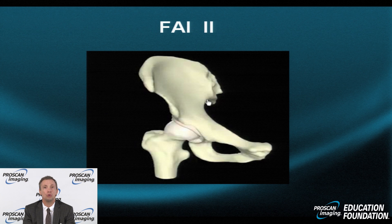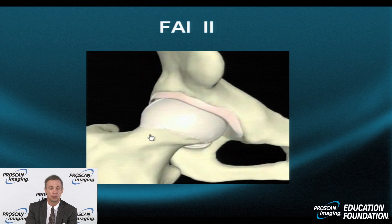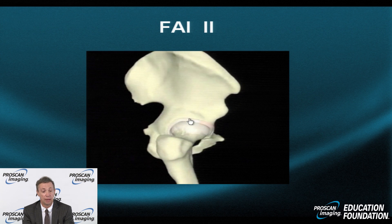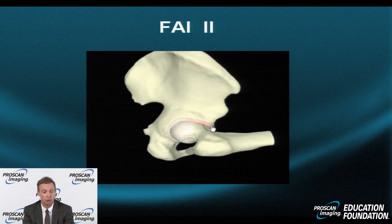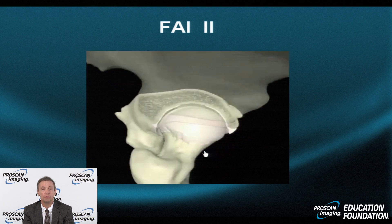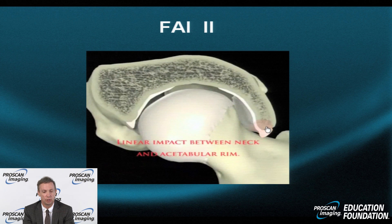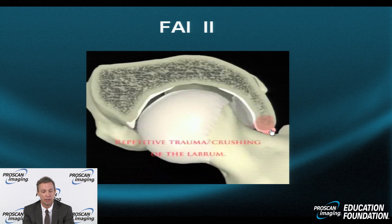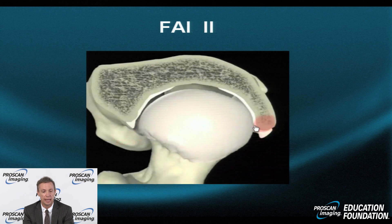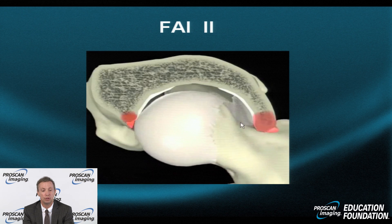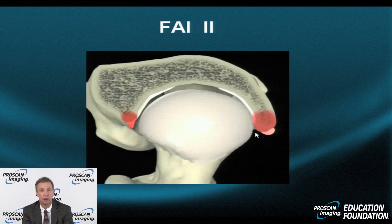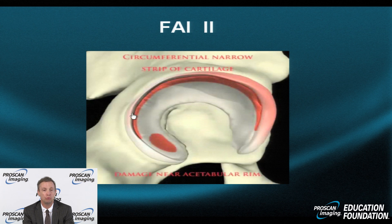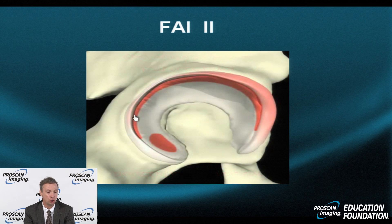In FAI type 2, the problem is primarily acetabular. We don't see an alteration in the head-neck junction, but the acetabulum is too big and too deep. When flexion occurs, it is the anterior acetabulum that comes in contact with the femoral neck, not the neck contacting the acetabulum. The large anterior acetabulum rakes the smooth, thin neck of the femur, eventually affecting the labrum — squishing it, impacting the bone, and producing abrasion or erosion underneath. Over time, edema develops along the femoral neck due to this raking phenomenon. When the head is pushed back with the overgrowth, a posterior contrecoup lesion may develop, and the entire circumference of the cartilage may be affected in FAI type 2 pincer impingement syndrome.